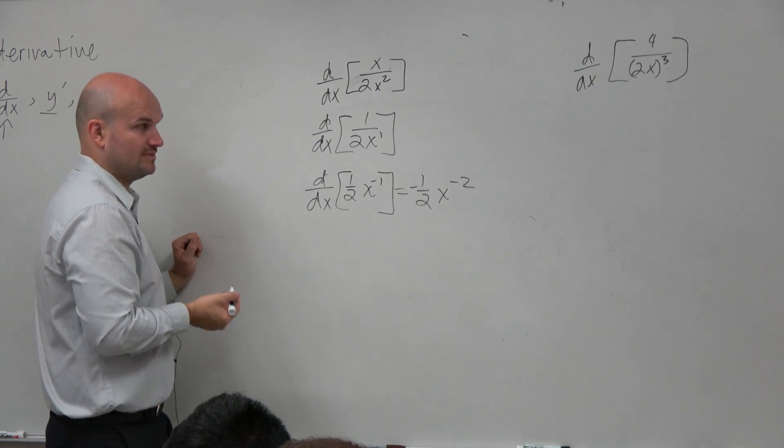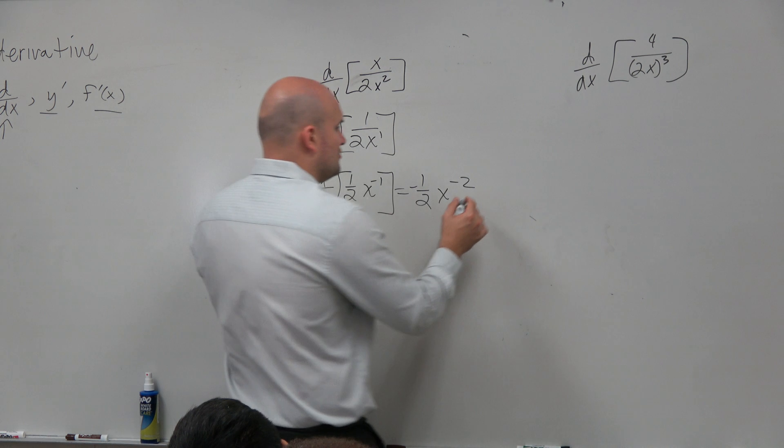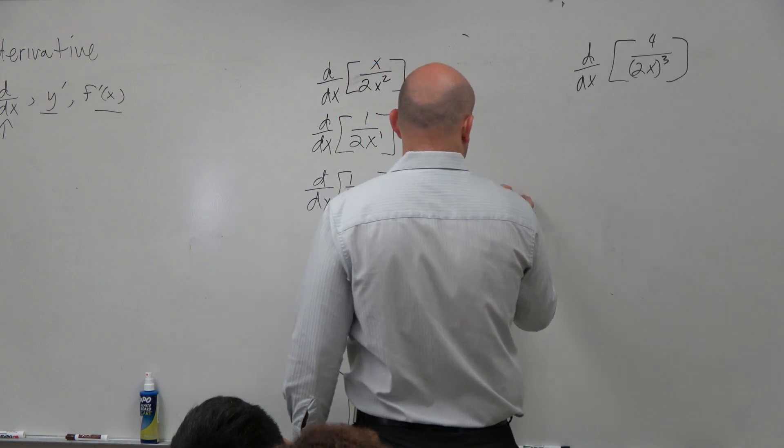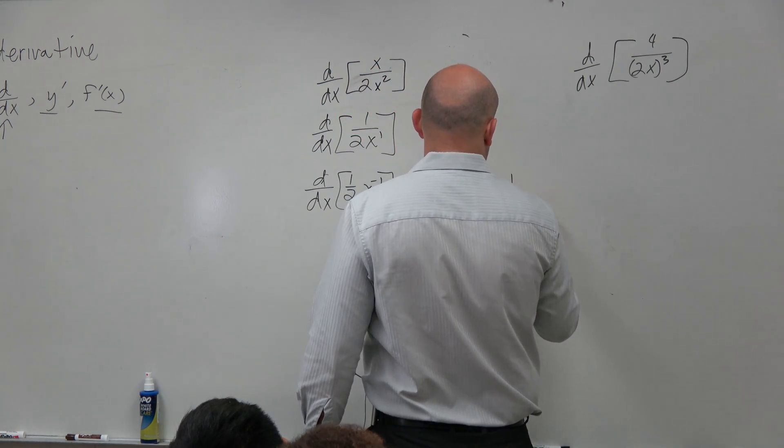Right? Which then in turn is going to be, put that as a normal power. So that's going to be negative 1 over 2x squared.